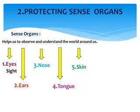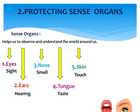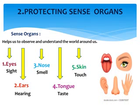Eyes help us to give us sight — through eyes we can see. Through the ears we can hear, it helps us for hearing. Nose helps us to smell. Tongue helps us to taste. Skin helps us to touch. You can see the example here: tongue, eyes, ears, nose, and hand.